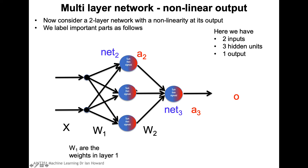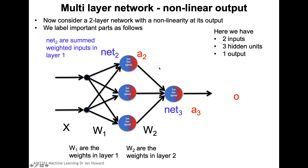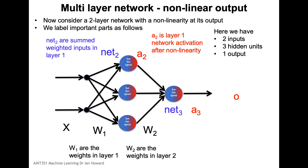We've got two inputs, weights in the first layer W1, and weights in the second layer W2. When calculating the forward part, we apply the input x and generate the output from the first linear layer, which we call net2. Then for each output element-wise, we pass that through a nonlinearity — in this case a sigmoid — transforming net2 values to a2 activation values.